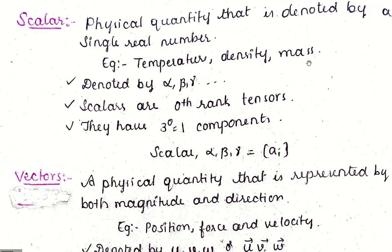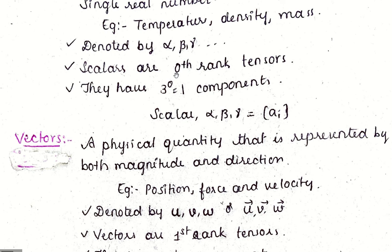expressed as some magnitude or number, but they cannot have a direction. They are denoted by alpha, beta, gamma. Scalars are 0th rank tensors, but we cannot say all scalars are 0th rank tensors. They have 3^0 - as rank is 0, 3^0 will be having one component. So a scalar can be represented by one number.